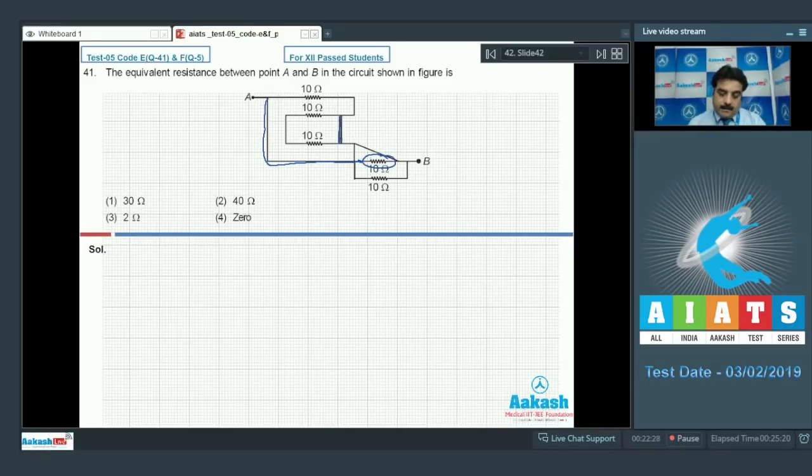Similarly, this wire will make another short circuit. When you concentrate carefully, all the current will flow through the shorter path between A and B. Hence, the resistance between AB will be zero.